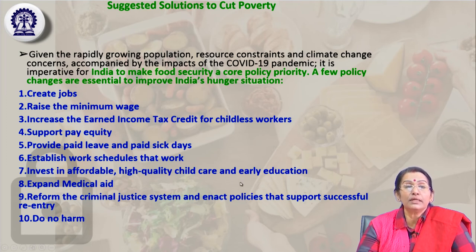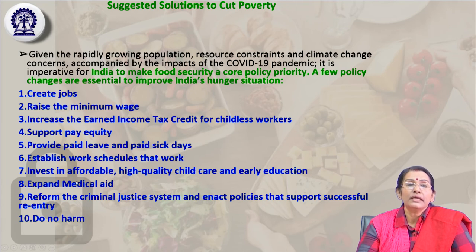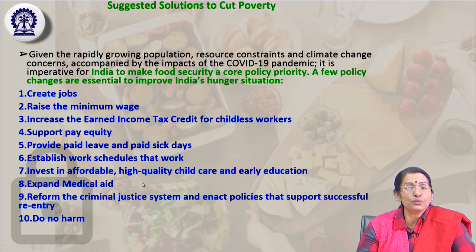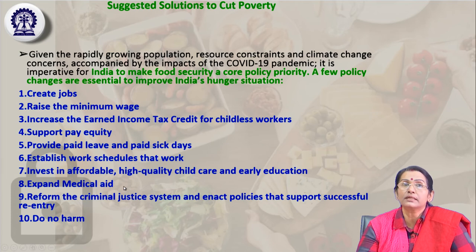Investing in affordable, high-quality childcare and early education is very important. Affordable nurseries and creches must be established. We need to spend and invest more in education and health. Expanding medical aid and facilities, making compulsory health cards for every child and citizen under different age groups, introducing vaccines, and running ICDS programs in rural areas — not only distributing nutritious food and nutrition supplements but also providing regular health check-ups — are all critical measures.